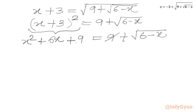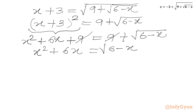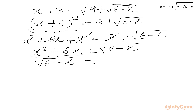Now we subtract 9 from both sides. We get x squared plus 6x equals square root of (6 minus x). Rearranging, we write square root of (6 minus x) equals x squared plus 6x. We take x common from the right-hand side, giving us x times (x plus 6).